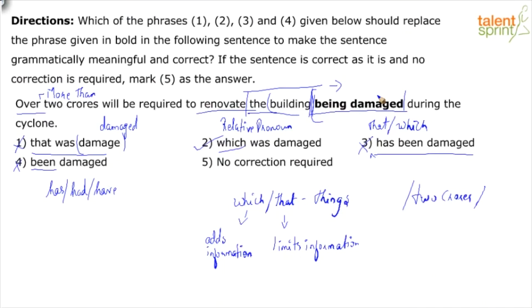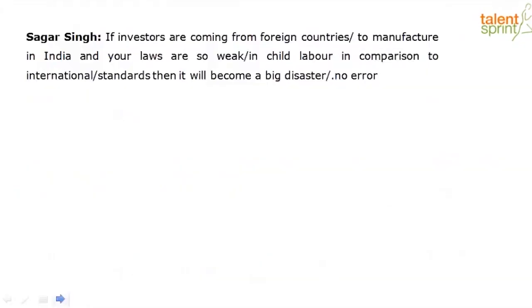Over two crores will be required to renovate the building. For what purpose? Why? Answering the question: 'being damaged during the cyclone.' Now, a new sentence: if investors are coming from foreign countries to manufacture in India and your laws are so weak in child labor in comparison to international standards, then it will become a big disaster. The context is in the present tense, so 'will' is fine.